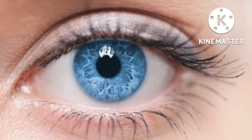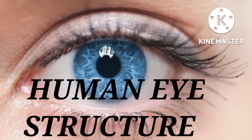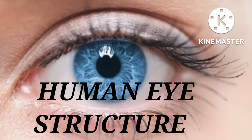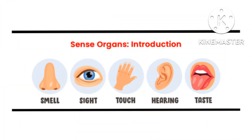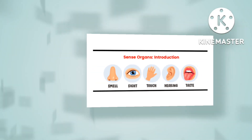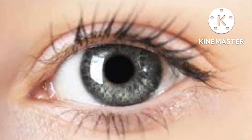Hello students and parents, welcome back to my channel. Today I'm going to explain the structure of the most important sense organ of our body — the human eye. In our body we have five important sense organs: eye, ear, tongue, nose, and skin. These sense organs provide five types of sensations — sight, smell, hearing, taste, and touch.